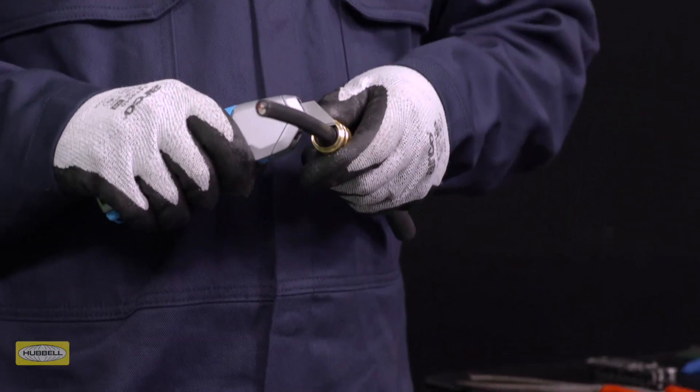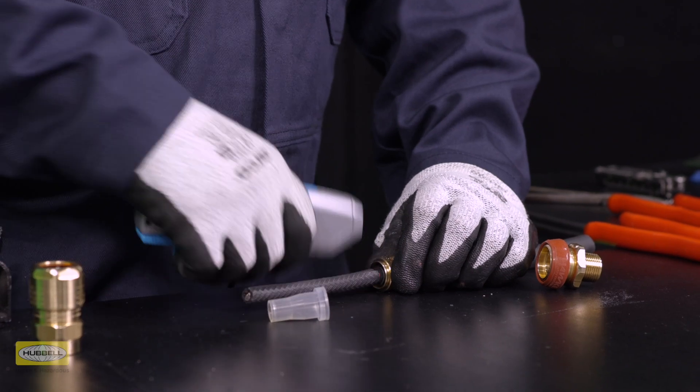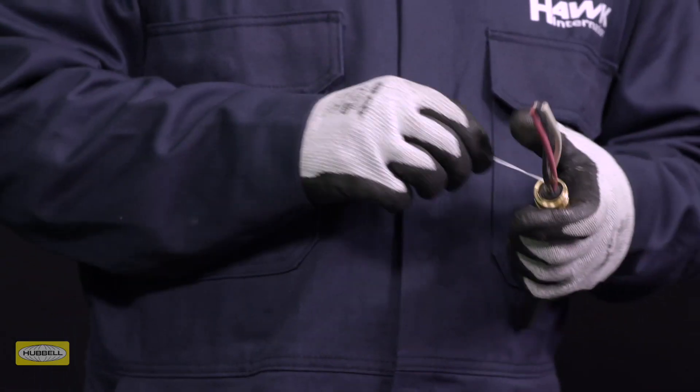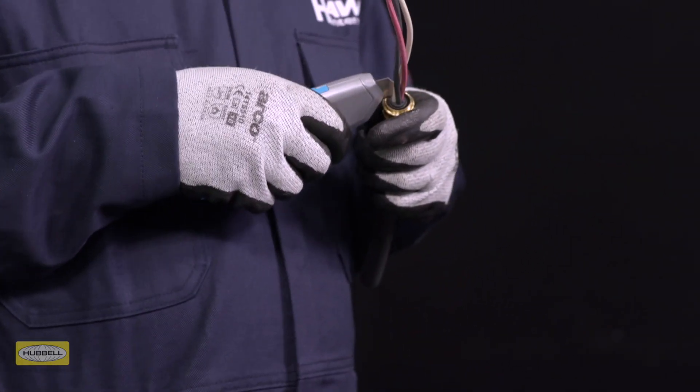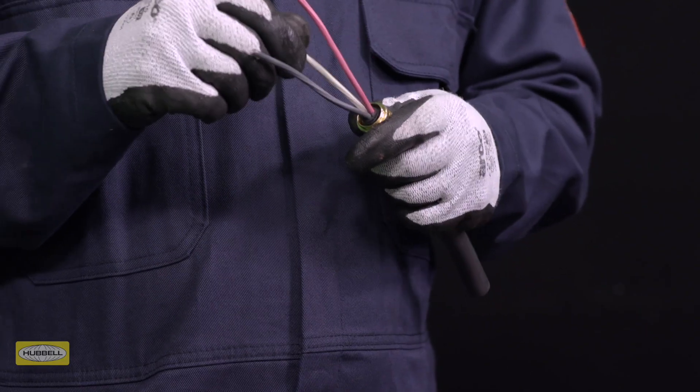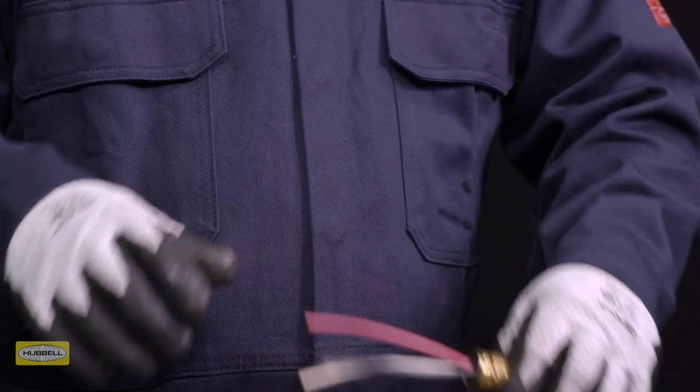Strip the inner sheath back to between flush and three millimeters from the end of the spigot. Remove any fillers, plastic, or coatings present in the cable. If required, prepare any drain wires or screens as per assembly instructions 2028.